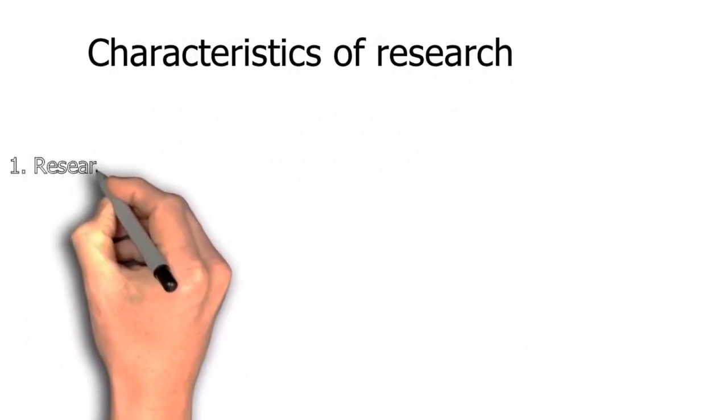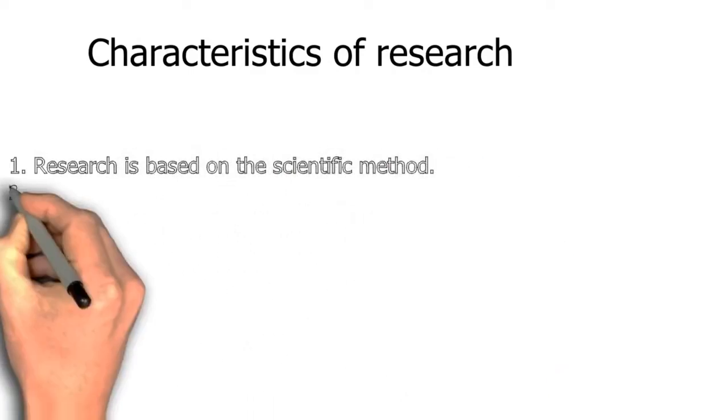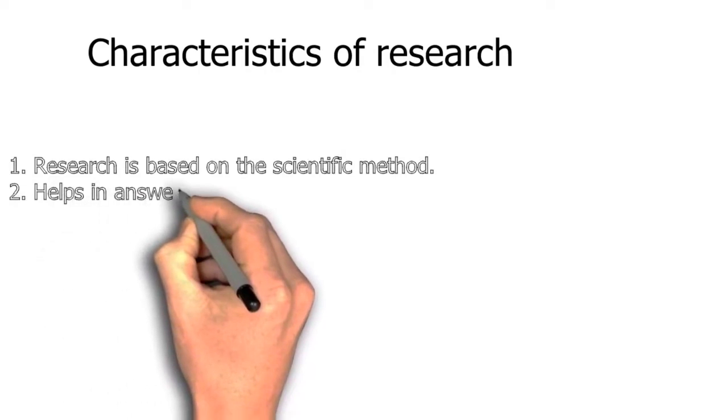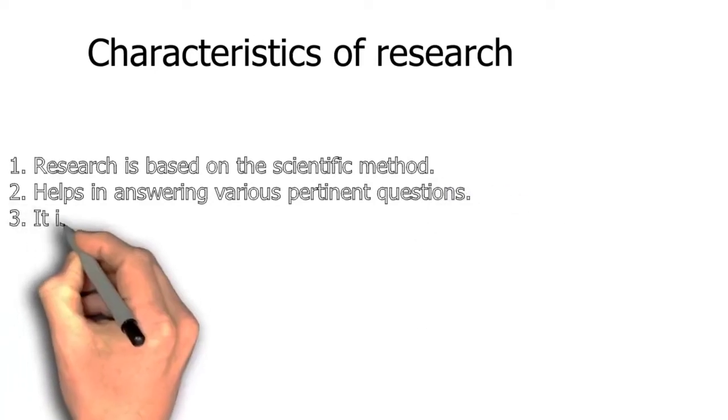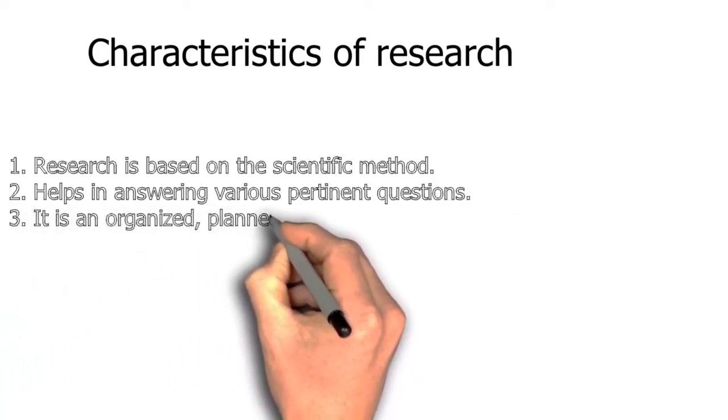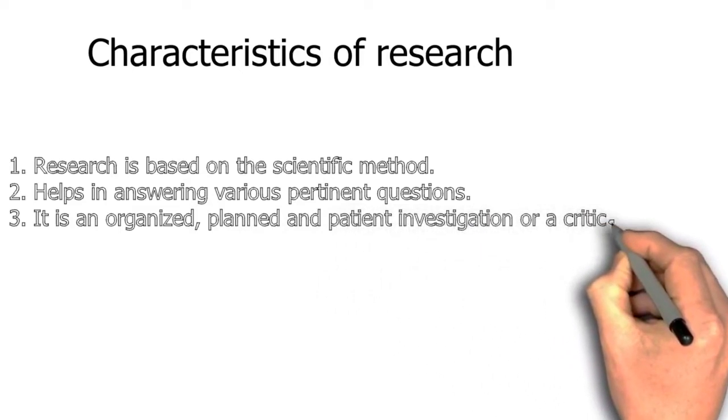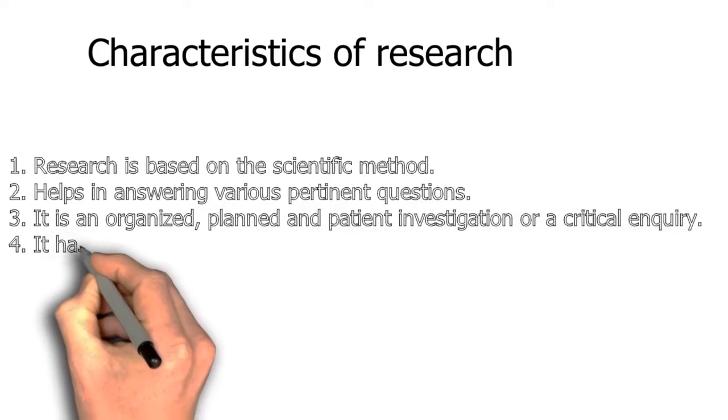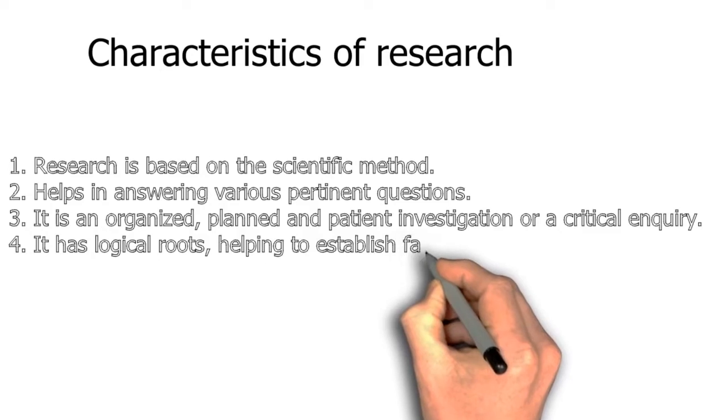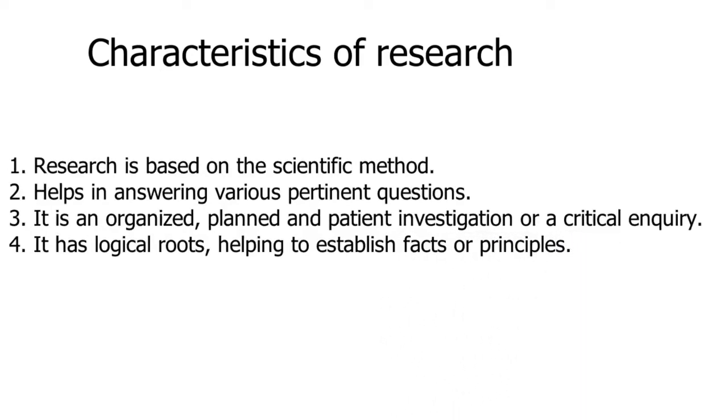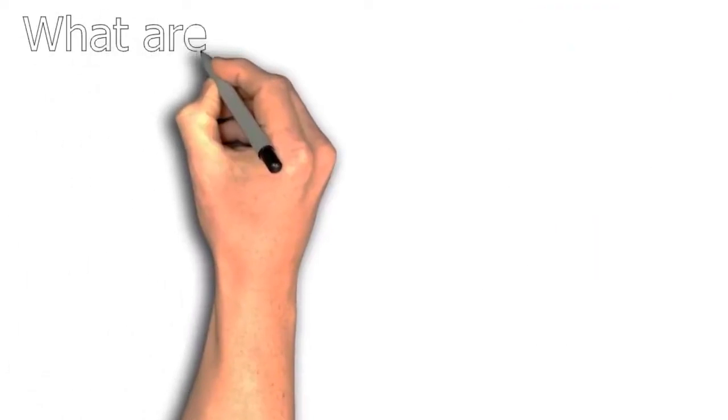What are the major characteristics of research? Research is based on scientific methods. Research helps in answering various pertinent questions. It is an organized, planned, and patient investigation of any scientific issue or critical inquiry. It has logical roots, helping to establish facts or principles based on assumptions or hypotheses that we might have.